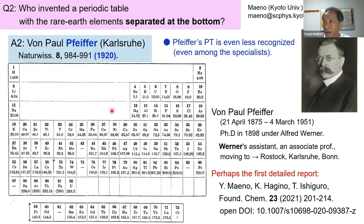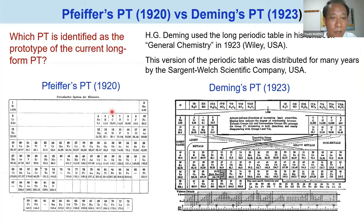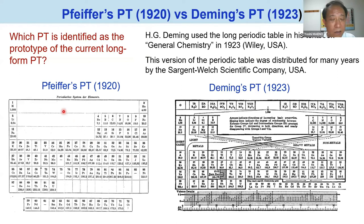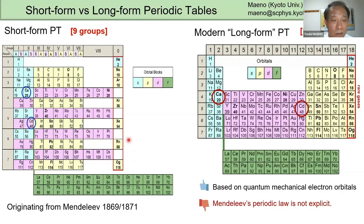This is a comparison between Pfeiffer's table of 1920 and Deming's periodic table. Deming's periodic table is quite well known and often cited as the prototype of the modern periodic table. However, comparing the two, I think we should identify Pfeiffer's periodic table as the prototype of the modern periodic table — three years before Deming's.